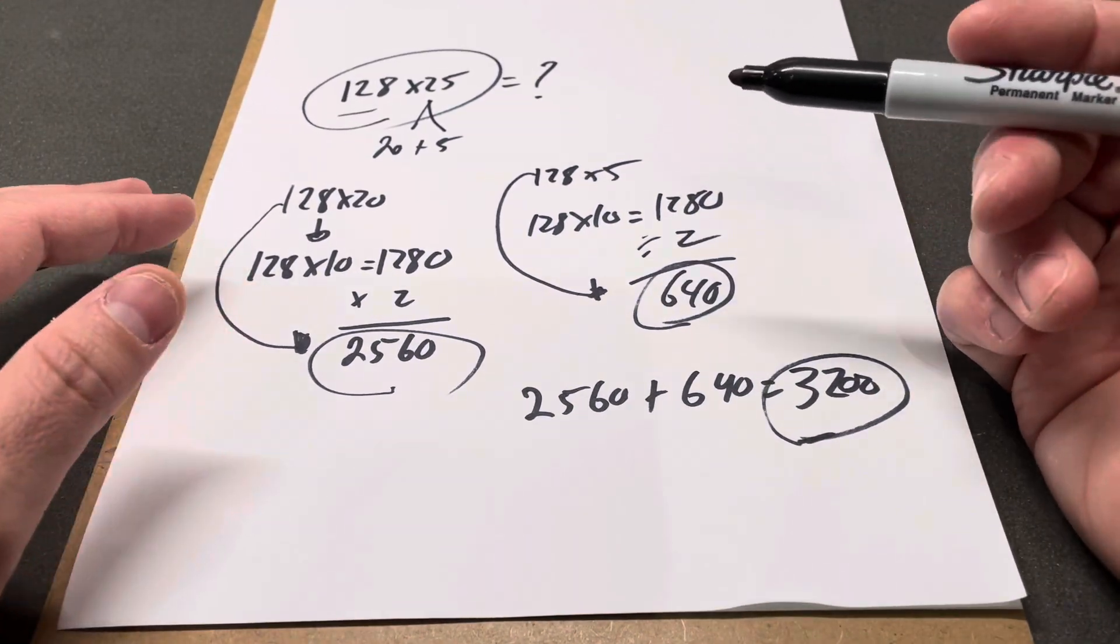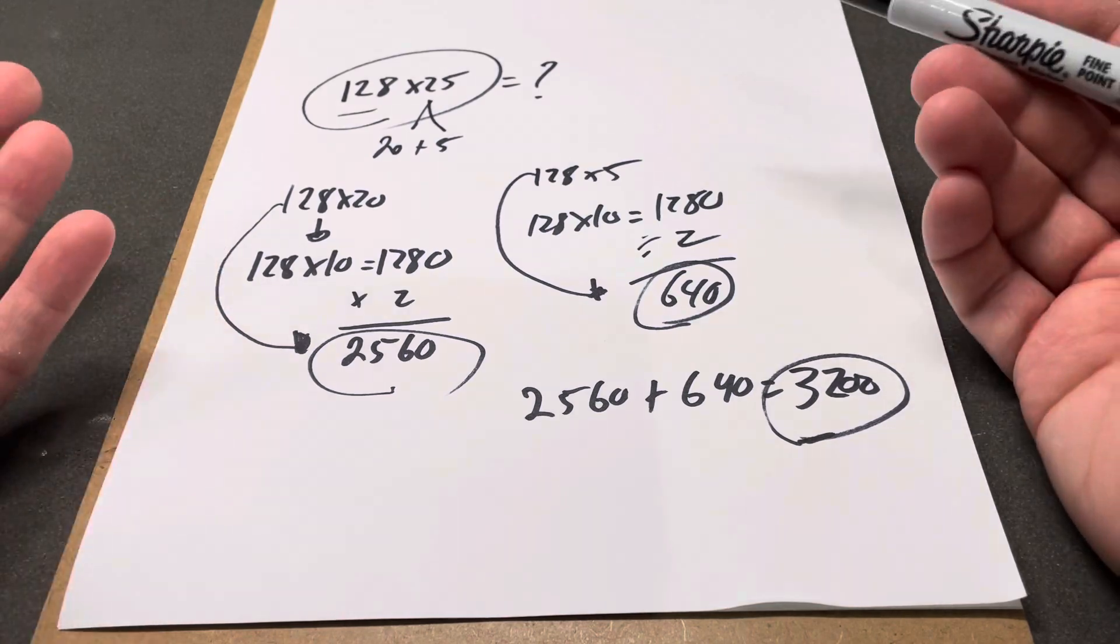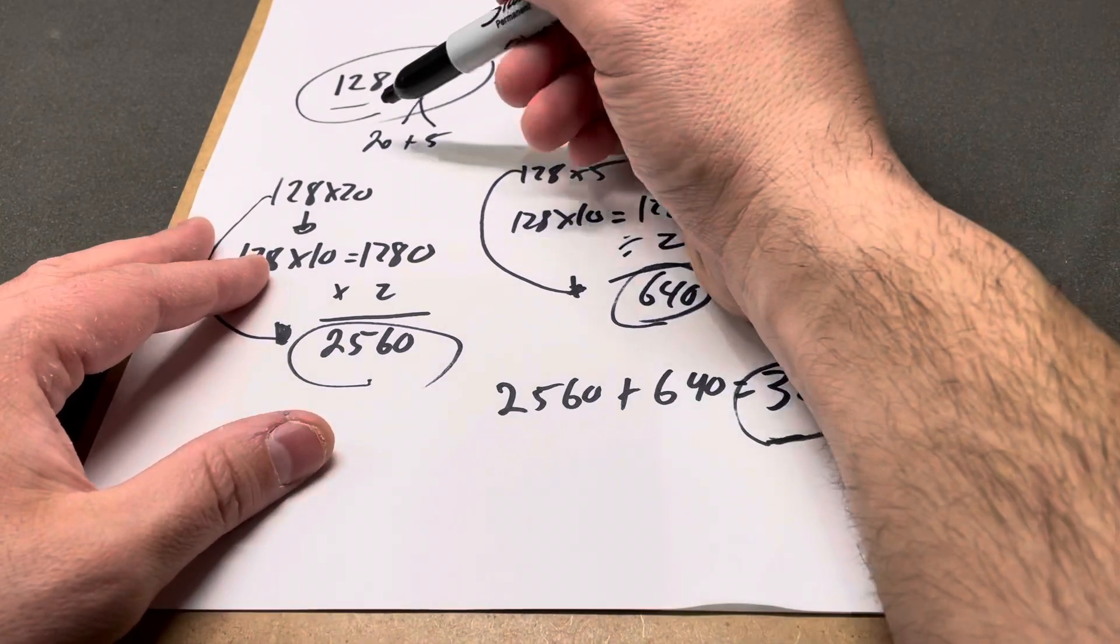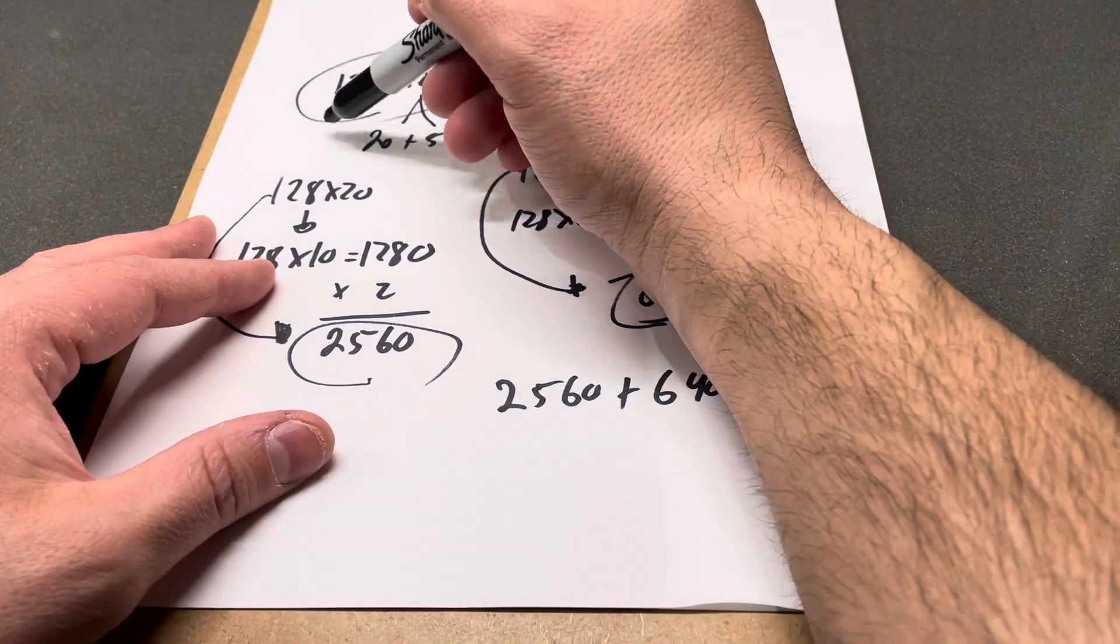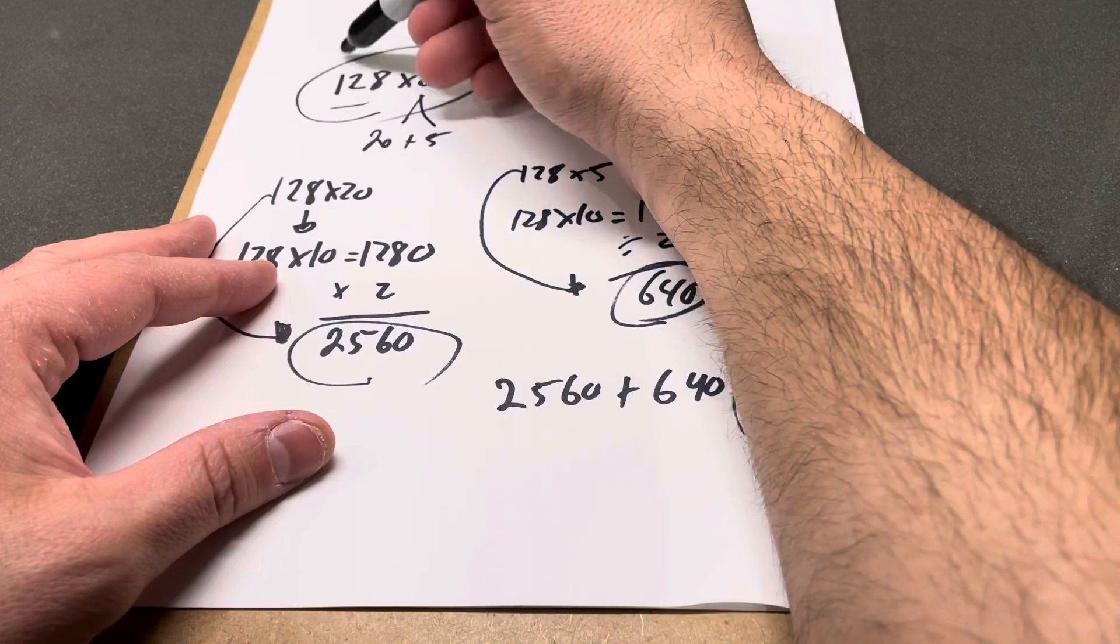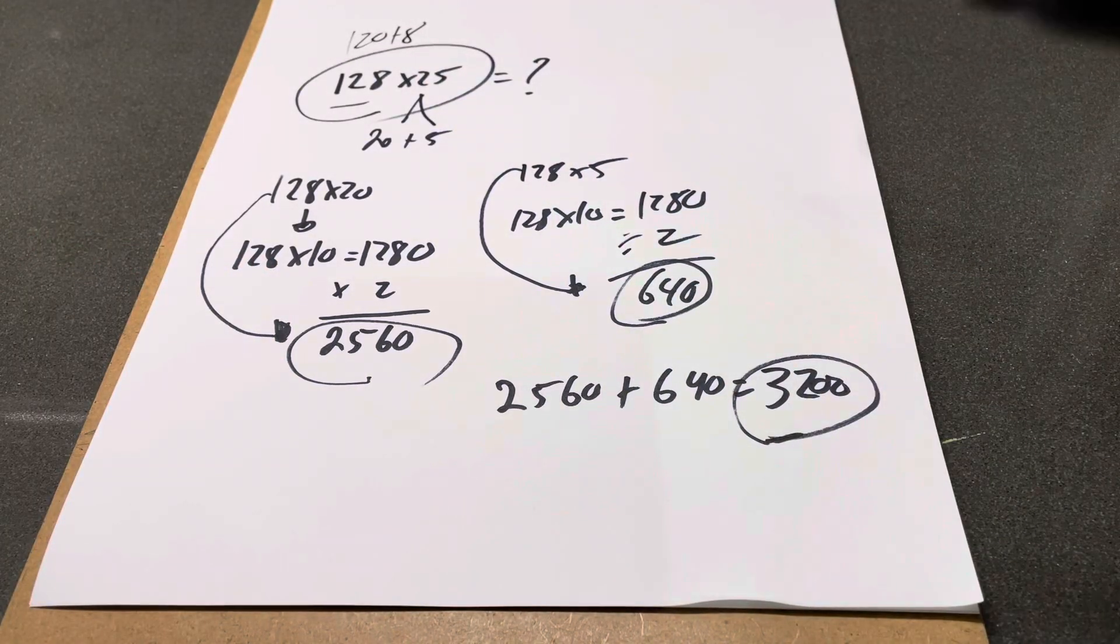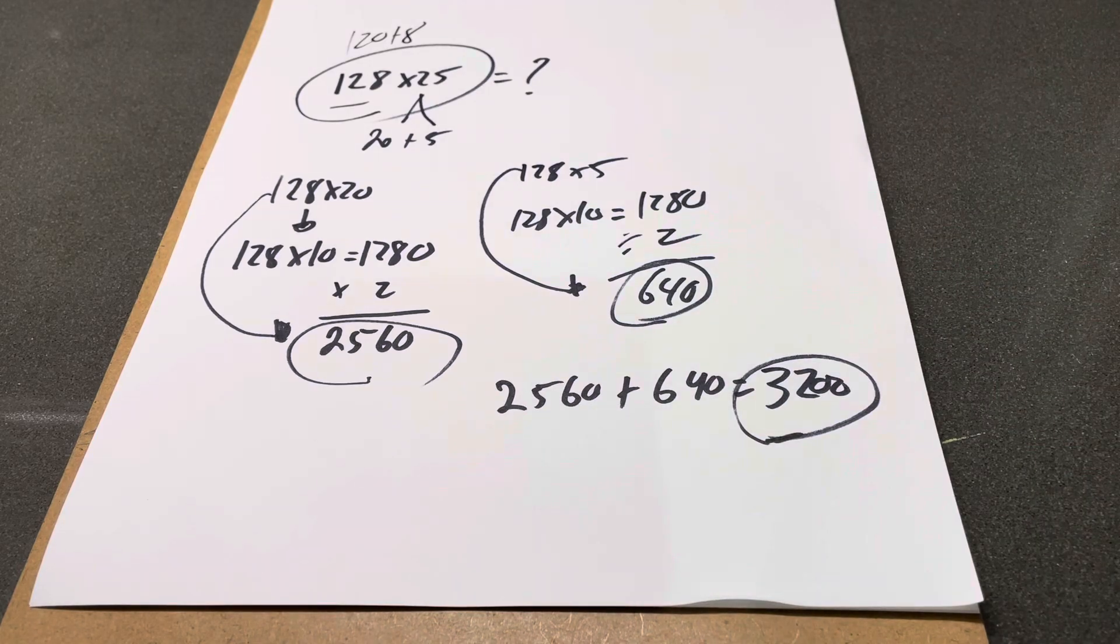Now, what you can do to make this even easier is break down the 128 as well. Instead of doing it as 128, you can break it down into 120 plus 8, but that involves more multiplication. That's a whole other video, and I'll probably do that video separately.